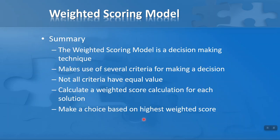In summary, the weighted scoring model is a simple decision-making technique that works best when you use several criteria for making a decision and not all criteria have equal value. You calculate the weighted score for each solution and make your choice based on the highest weighted score, while also considering other decision-making techniques such as cost-benefit analysis. That's the weighted scoring model problem-solving technique. I hope you found this video useful. Thank you for your attention.